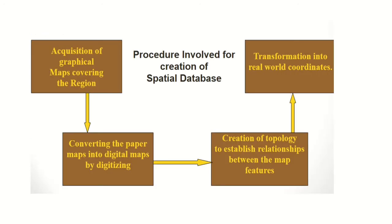This is a pictorial representation of the procedure for creating a spatial database in tourism map preparation. Step one is acquisition of graphical maps covering the region. Then the paper map is converted to a digital map by digitizing. Next, topology is created to establish relationships between map features. Finally, the data is transformed into real-world coordinates.